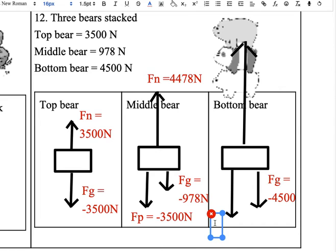Bottom bear is supporting middle bear and middle bear has a normal force of 4478, so that means that bottom bear has a push force equal to negative 4478.